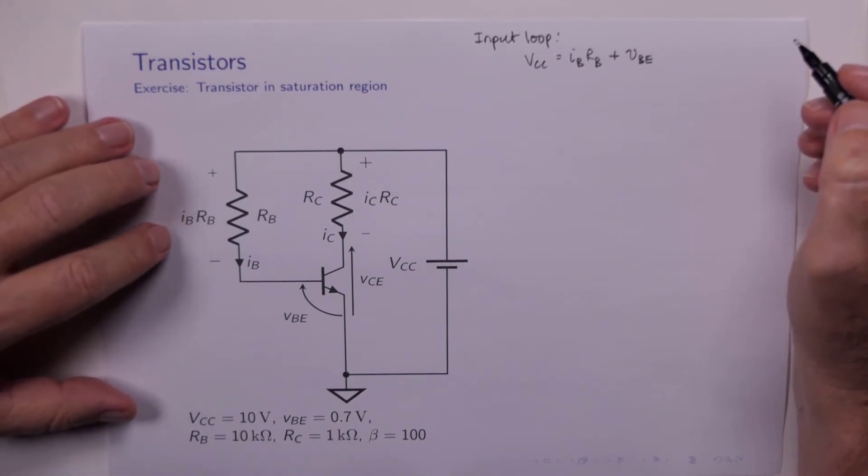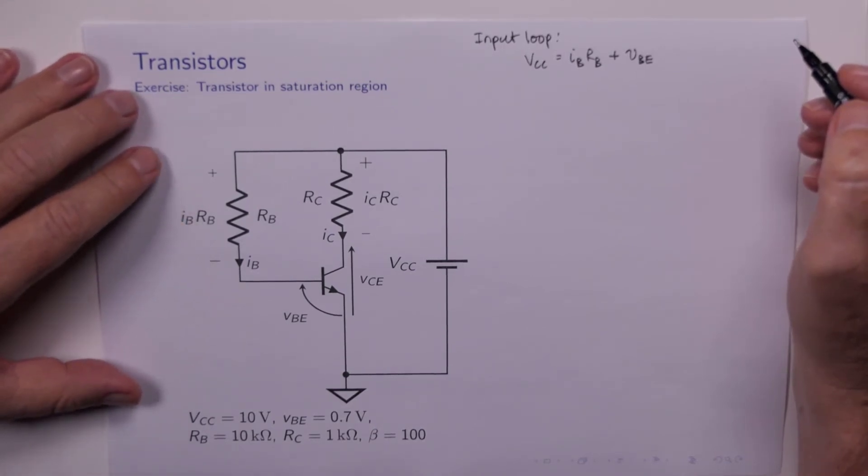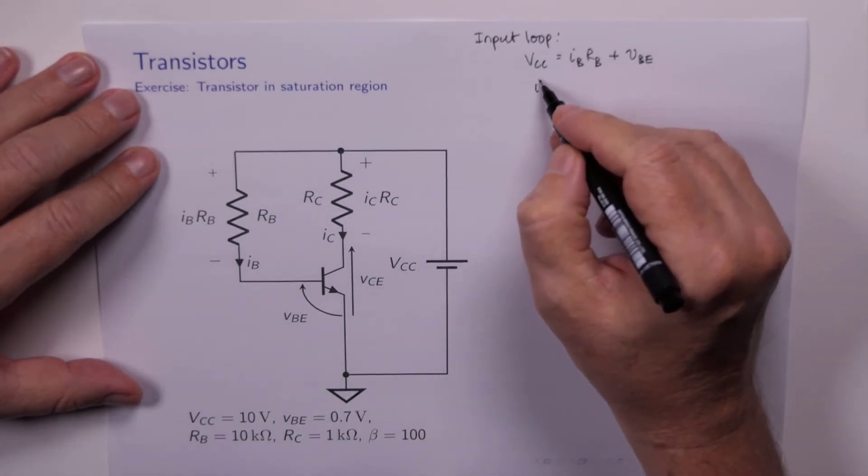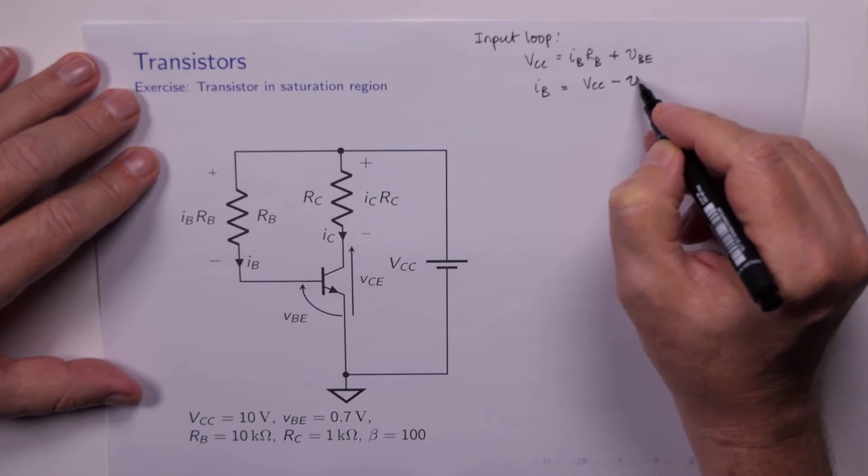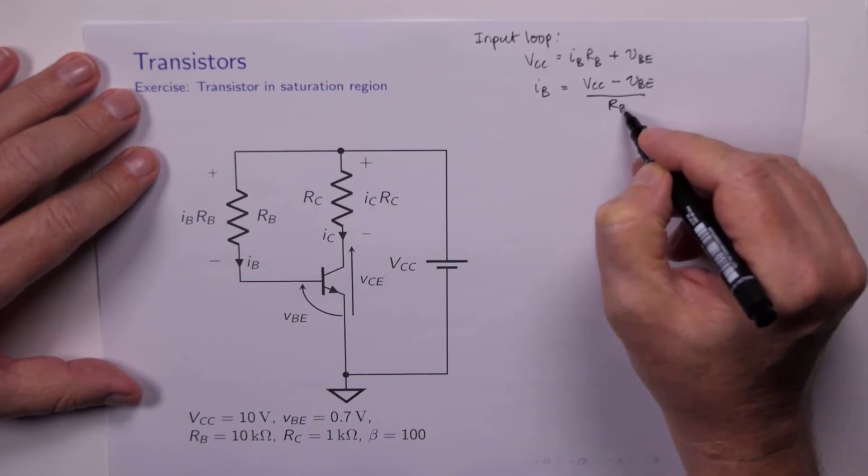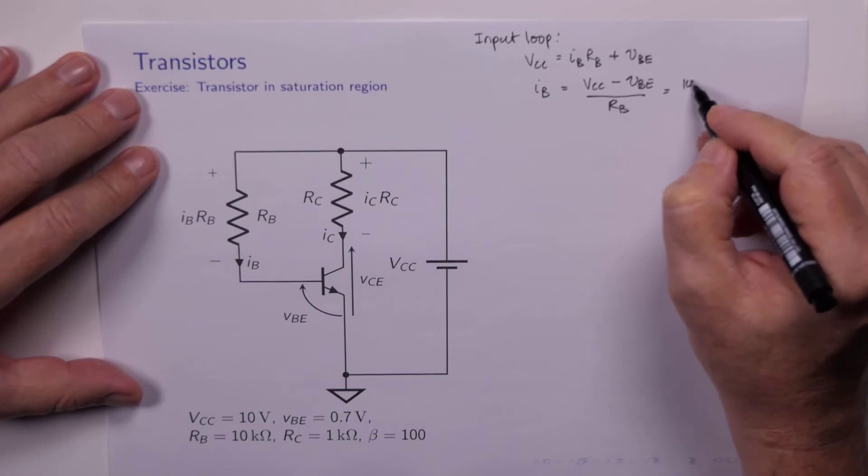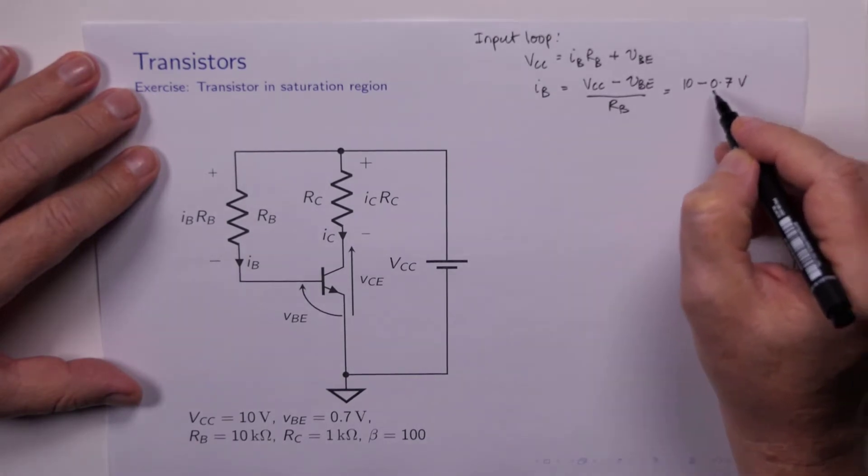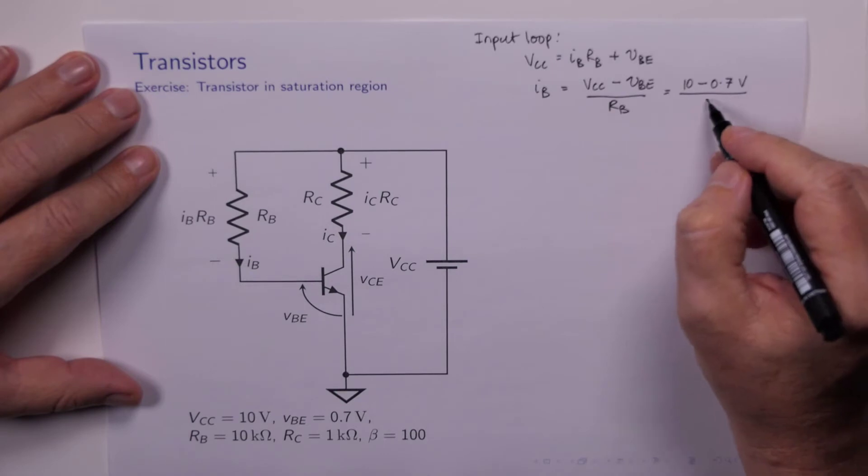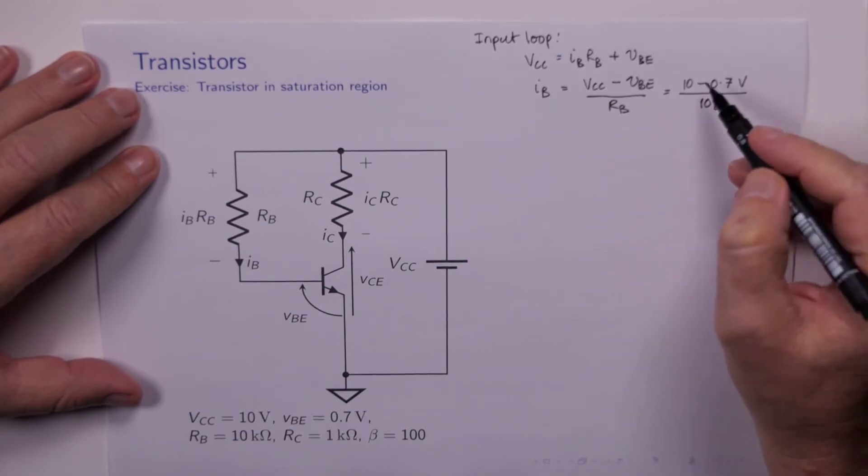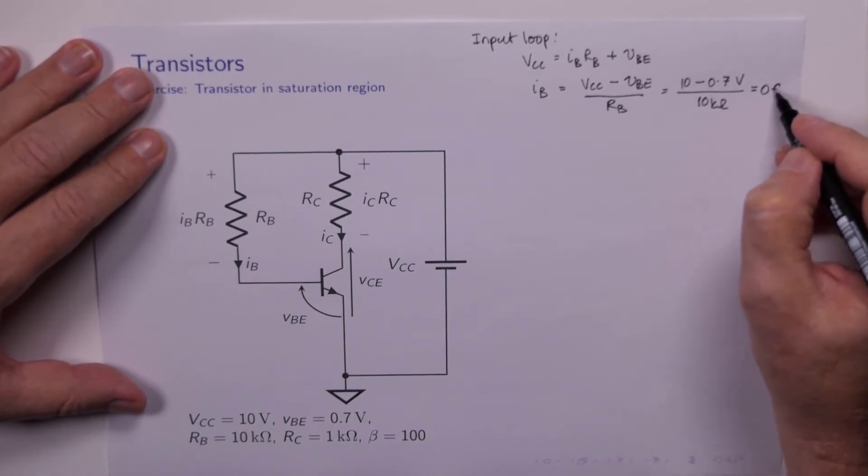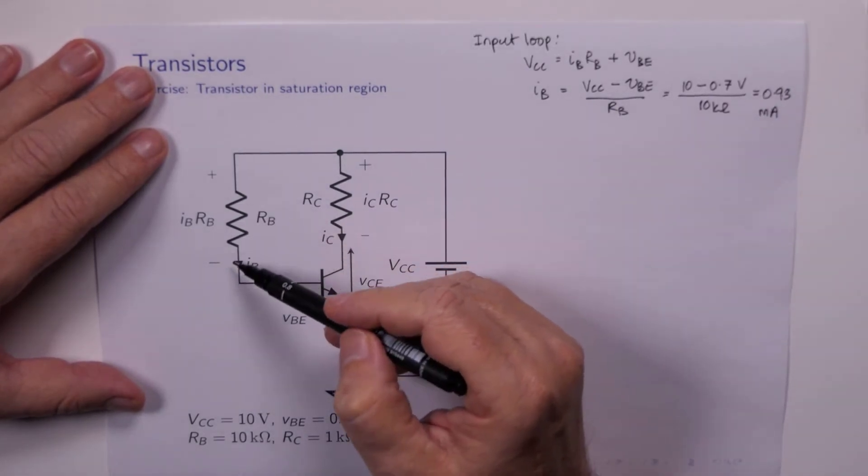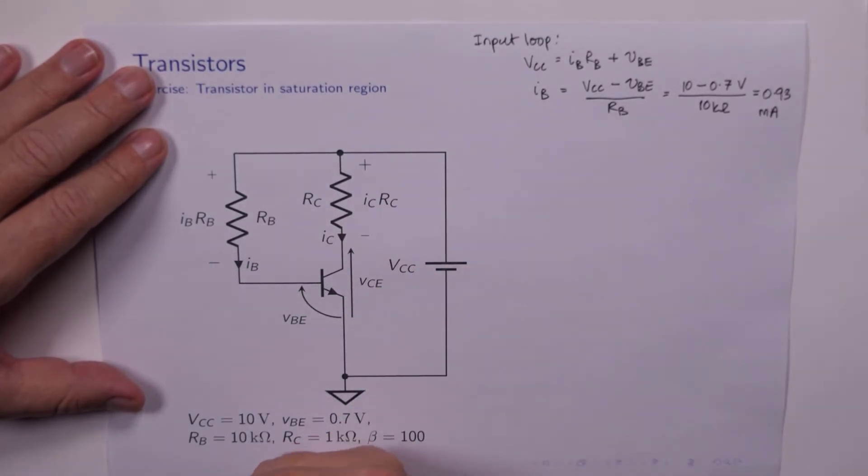We've got VCC equals IB RB plus VBE. Now what do we do here? Well, I can calculate that IB, therefore, is equal to VCC minus VBE over RB, which is 10K ohms. So that's 9.3 over 10, which is 0.93 milliamps.